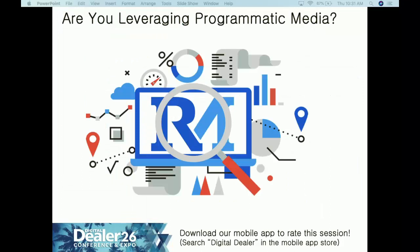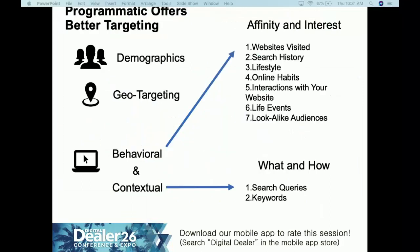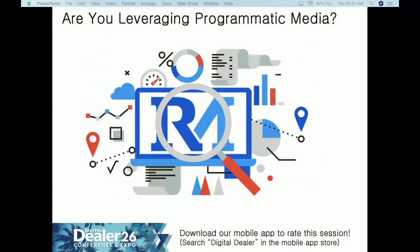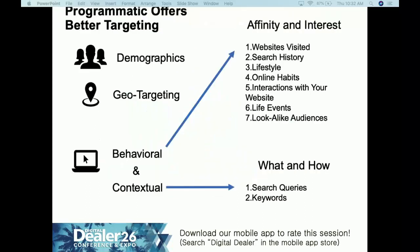Are you leveraging programmatic media? Programmatic includes Pandora, video pre-roll, and social media — it's automation to help optimize your bidding. Programmatic can target far better than traditional media like television or newspapers. Traditional media is limited to demographic and geographic targeting, and not very granular geographic targeting either. Programmatic goes well beyond that.